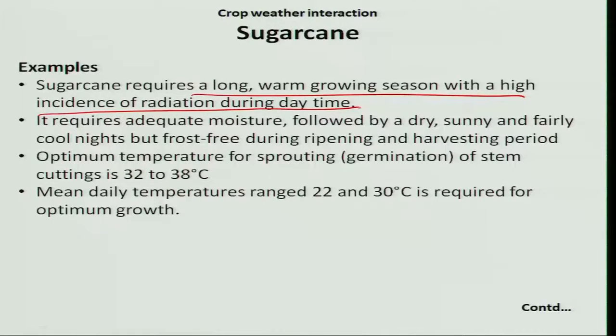The early season starts from November to mid-March and the late season starts from February to April. In the early season, sprouting takes almost 16 to 23 days, while in the late season during the hot weather period, germination is completed within 7 to 15 days. Therefore, temperature is the determining factor for germination or sprouting of sugar cane.